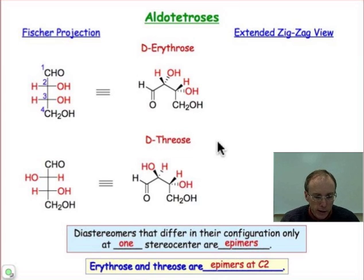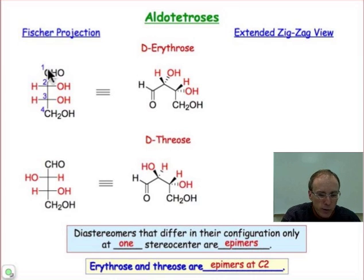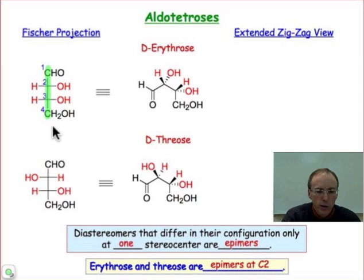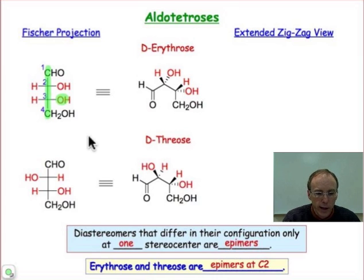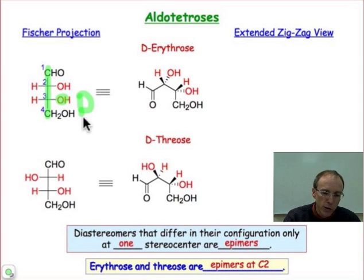With your model in hand, we're going to start with D-erythrose and look at the Fischer projection. All four carbons are in the vertical plane. It's a D sugar, meaning the bottom-most hydroxyl group at the stereocenter at carbon 3 is on the right-hand side in the Fischer projection.